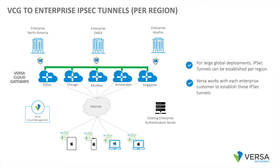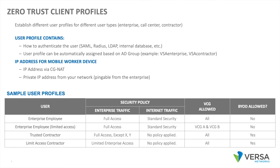In the Versa solution, we can form IPsec tunnels back to the enterprise per region. In this example, we have one IPsec tunnel for North America, one for EMEA, and one for AsiaPAC. Versa works with each customer to build these IPsec tunnels back to your enterprise. Versa supports different user profiles for different user types — for example, enterprise, call center, and contractor.